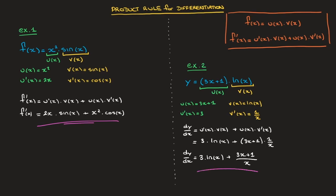And that's the final answer. That's how we can differentiate a product of two functions using the product rule. And that's it for this tutorial.